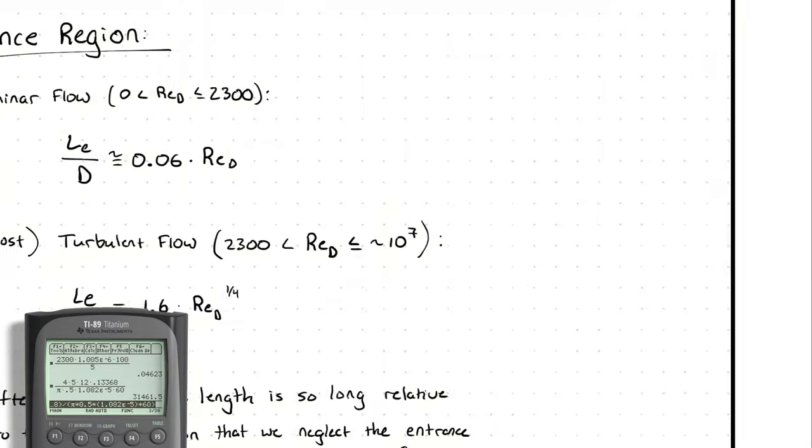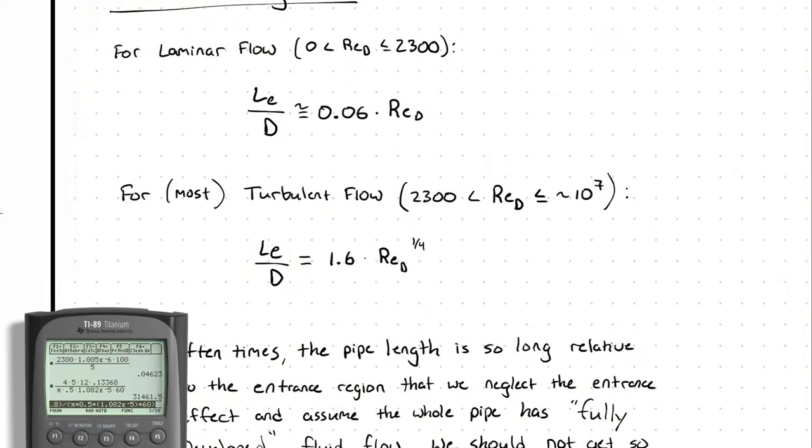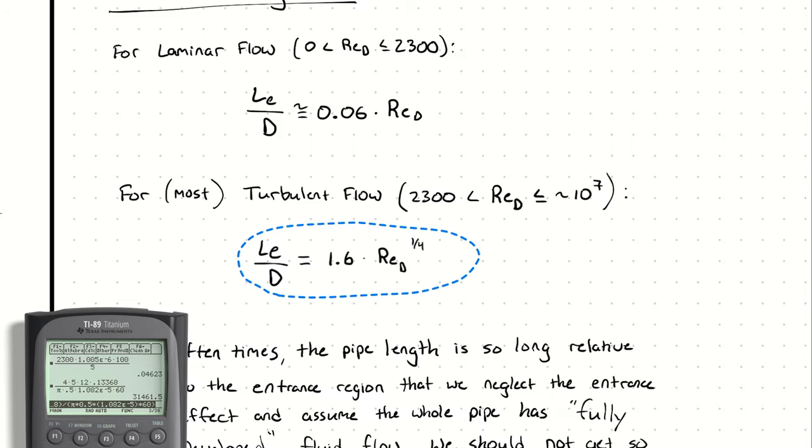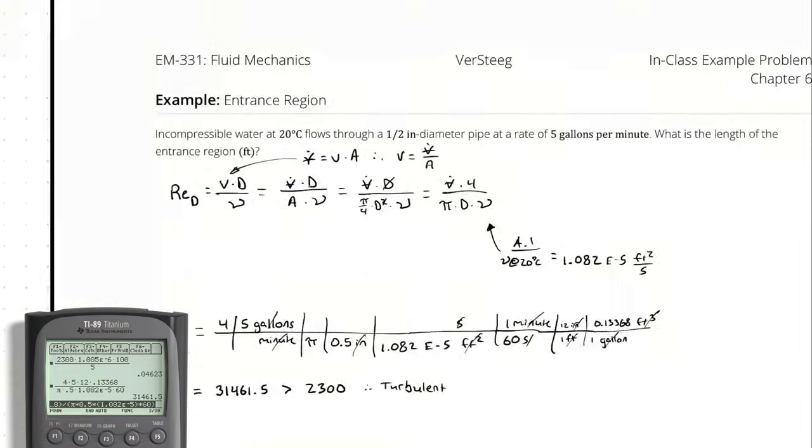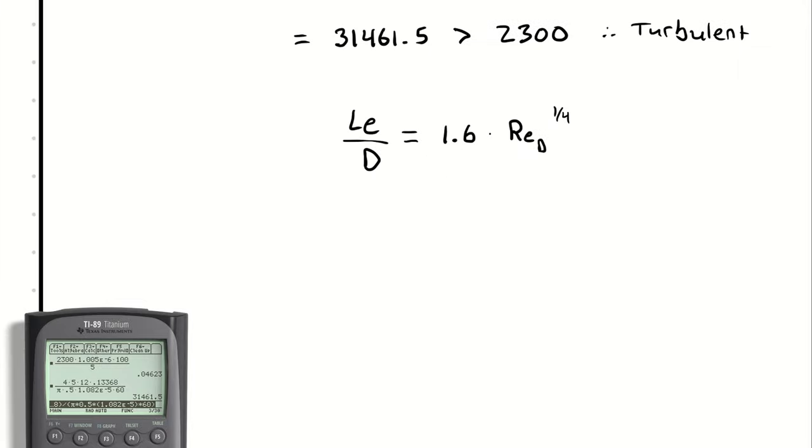For turbulent flow, we're going to use the equation entrance length divided by diameter is equal to 1.6 times the Reynolds number raised to the 1 quarter power. Therefore, entrance length can be expressed as 1.6 times diameter times the Reynolds number raised to the 1 quarter power.